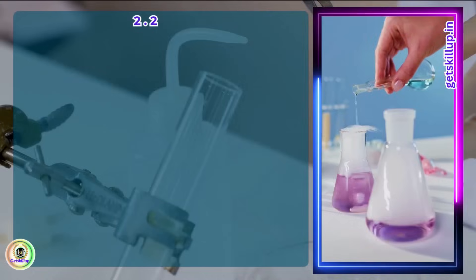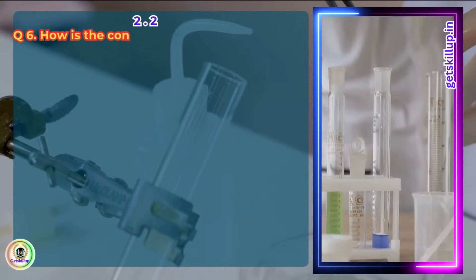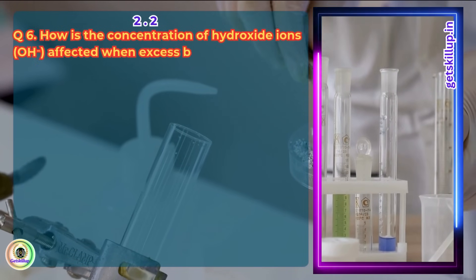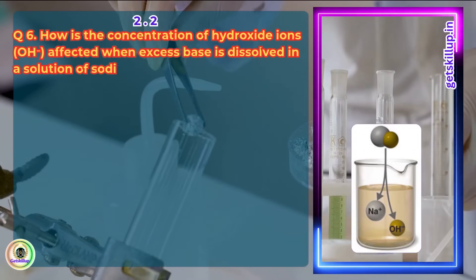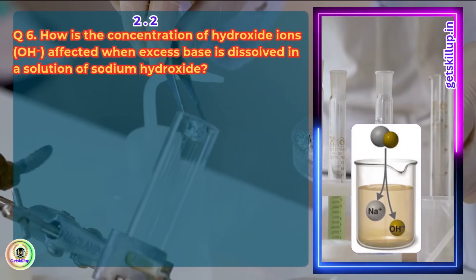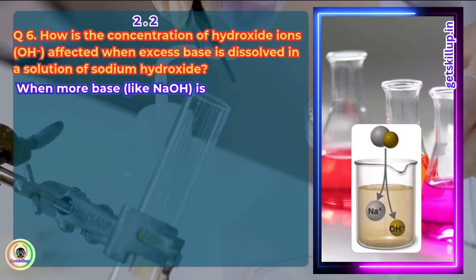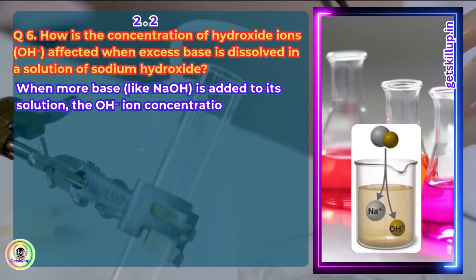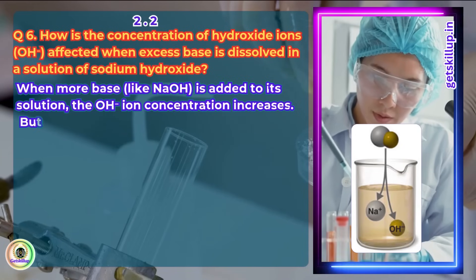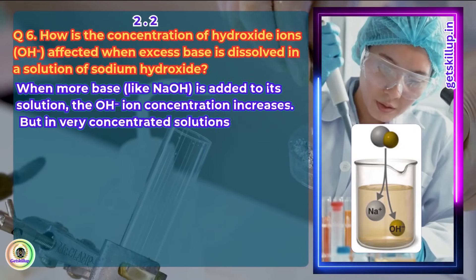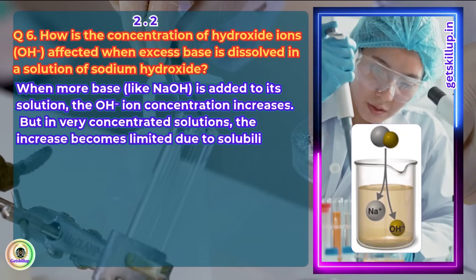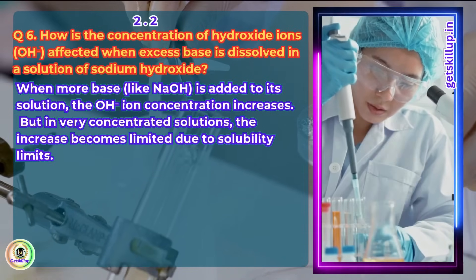Question 6. How is the concentration of hydroxide ions OH- affected when excess base is dissolved in a solution of sodium hydroxide? When more base, like NaOH, is added to its solution, the OH- ion concentration increases. But in very concentrated solutions, the increase becomes limited due to solubility limits.